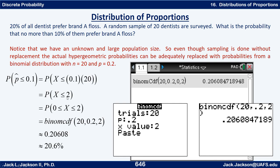Since x must be a whole number, we want the probability that x is between 0 and 2 inclusive. That is the binomial CDF. The CDF goes from the leftmost value, which is 0 here, up to our value. So this is binomial CDF with n equals 20, p equals 0.2, and x equals 2.